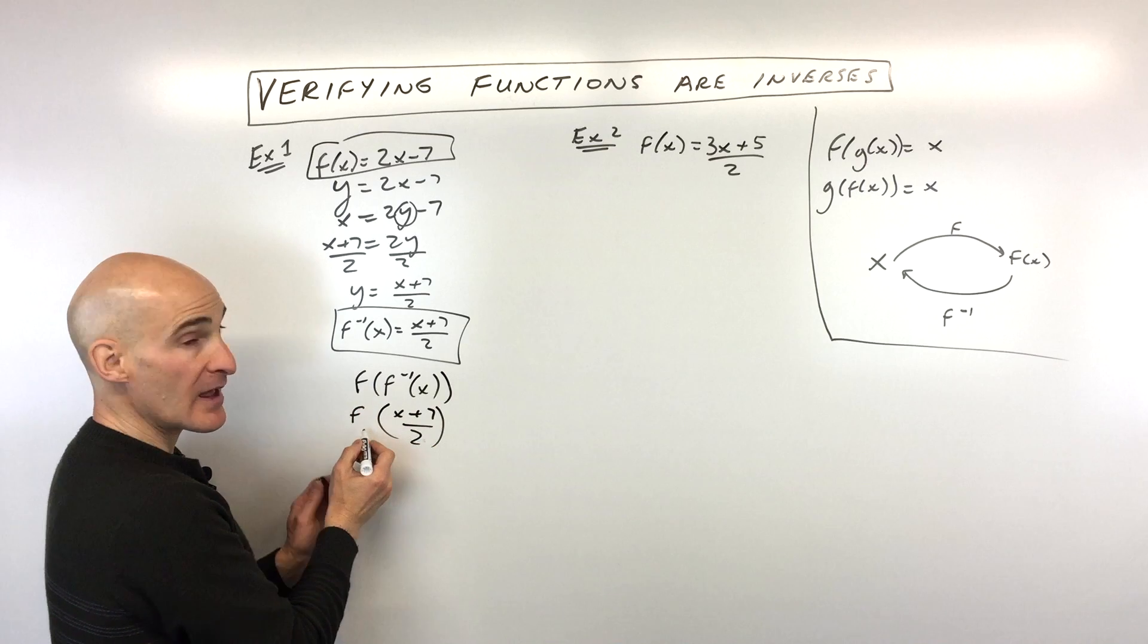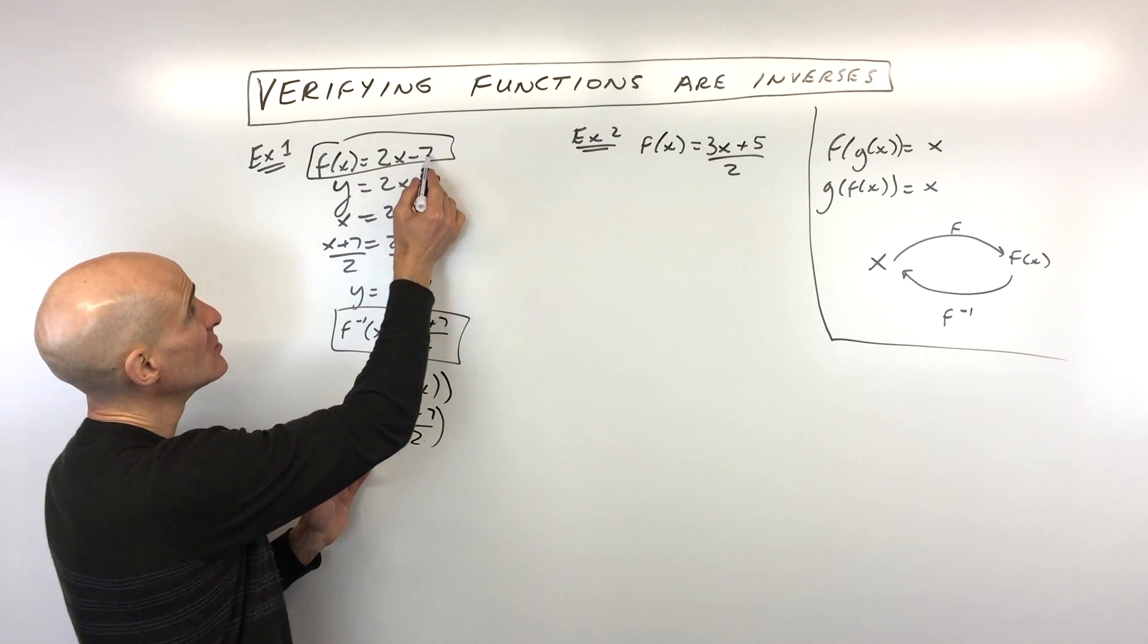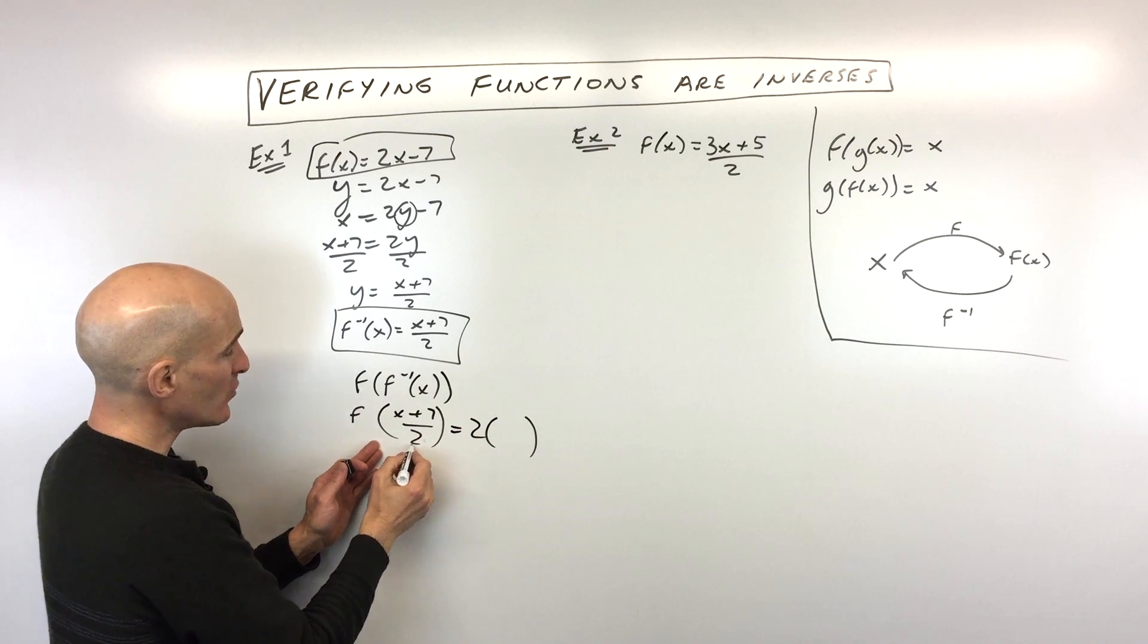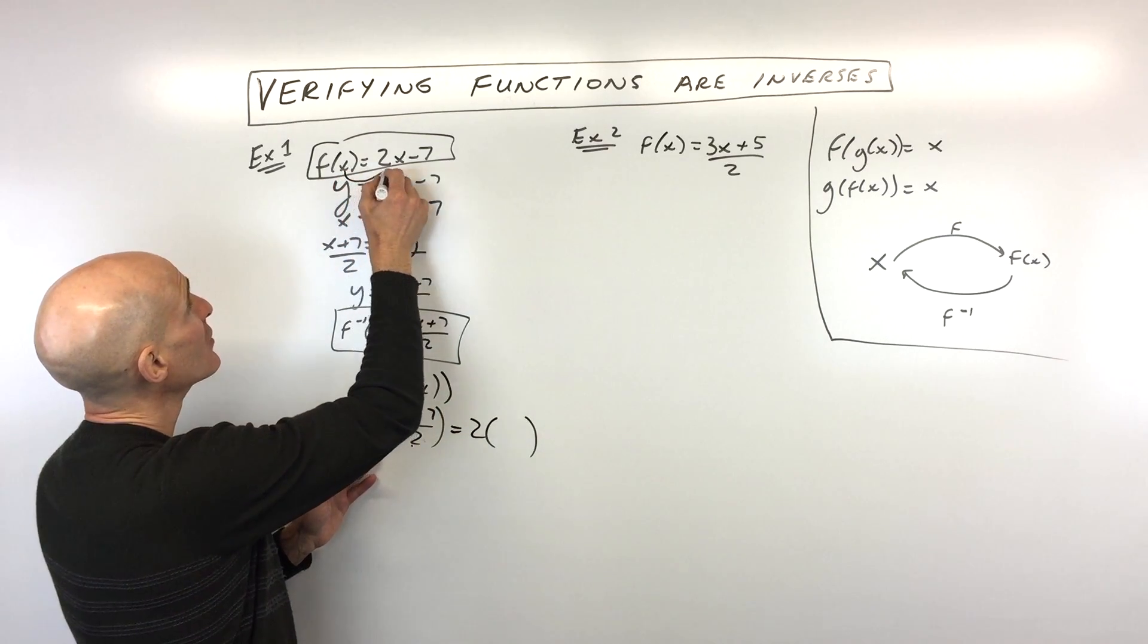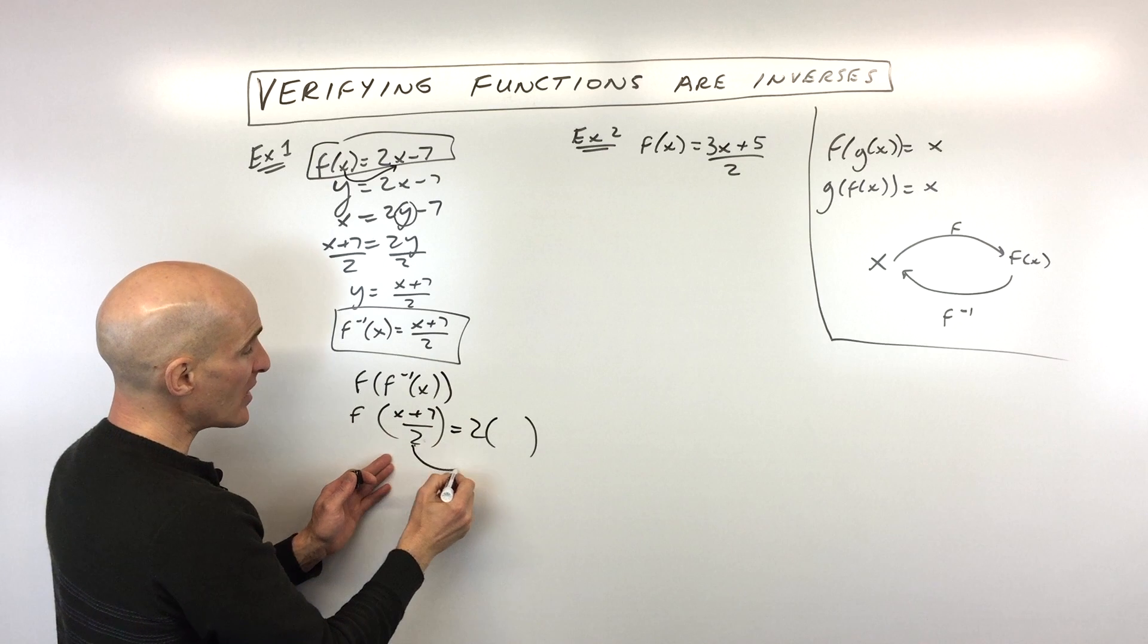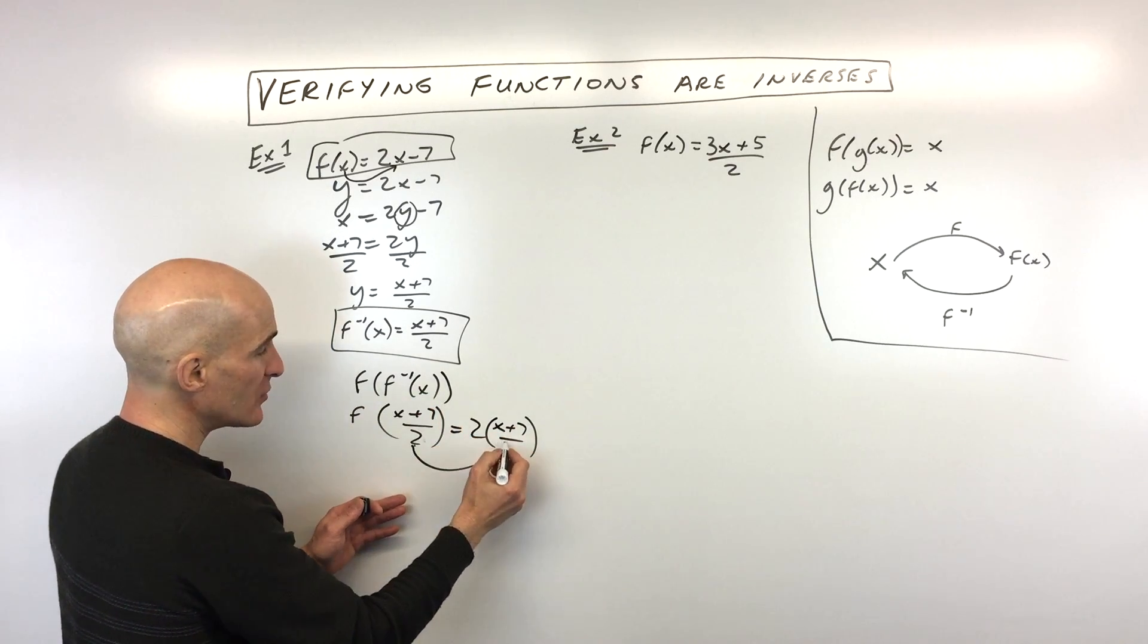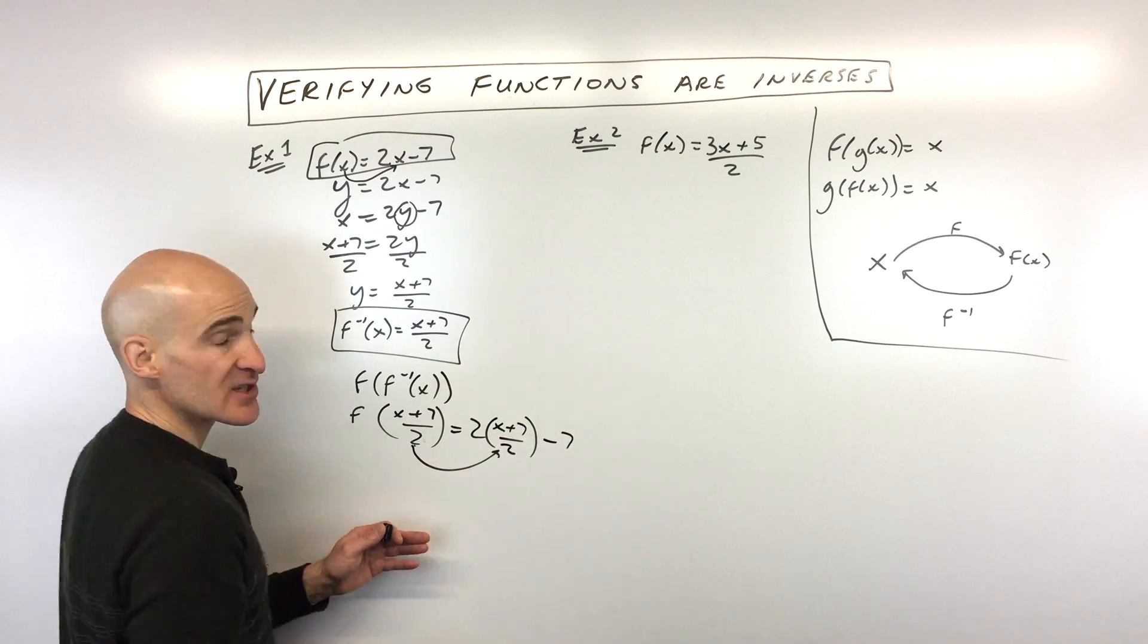We're going to put it into our F function, which is two times X minus seven. So again, remember the way functions work, whatever's in parentheses goes in place of X on the right side of the equation. So we're just going to replace X with the new X value, the new input, and we're going to simplify.